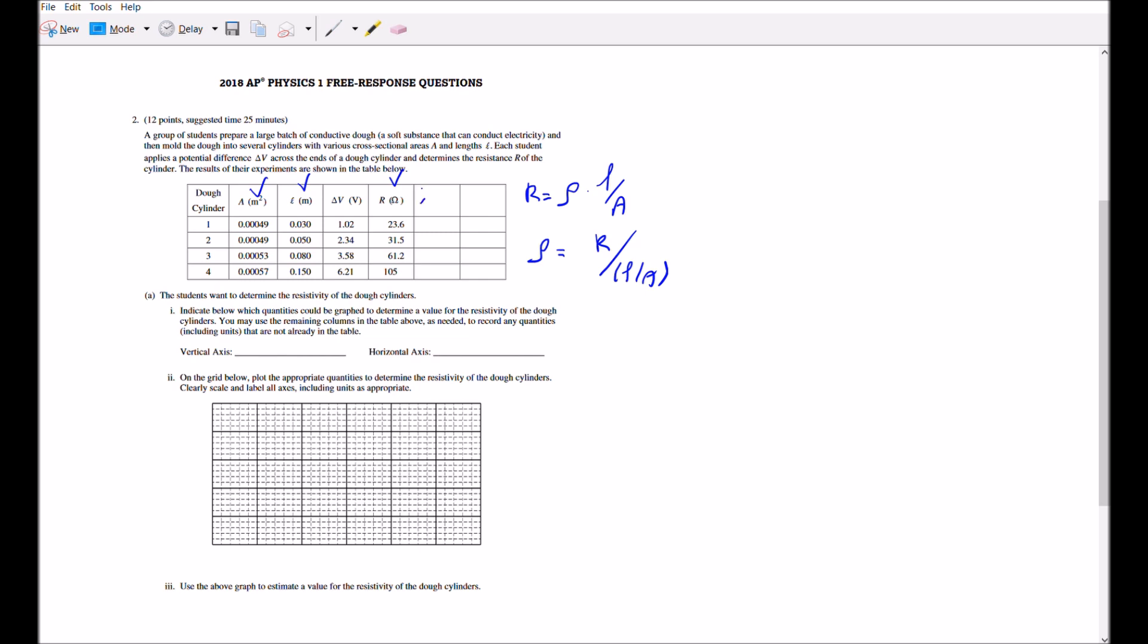We just need to add one more column which is derived information by dividing length over cross-sectional area in the units of one over meters. We are done with calculations for L over A.